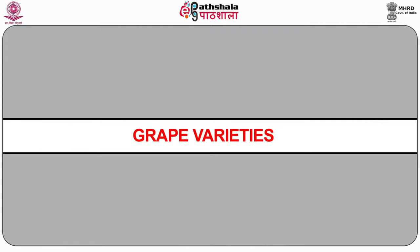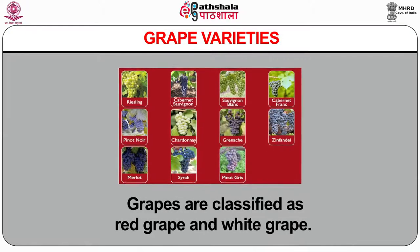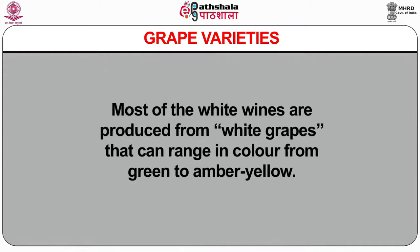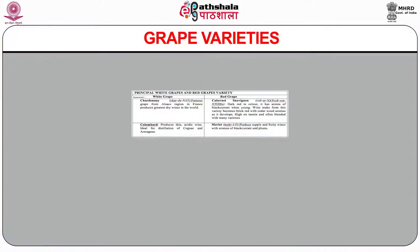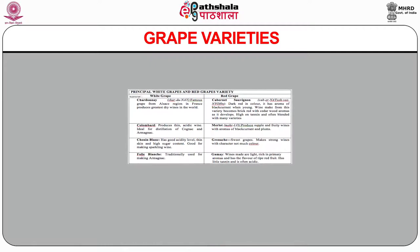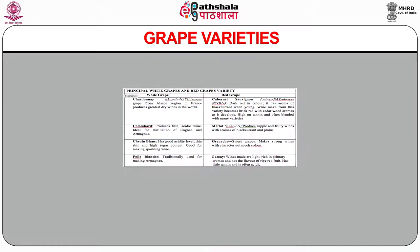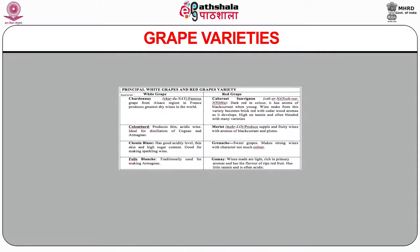Grapes are classified as red grape and white grape. Most white wines are produced from white grapes that can range in color from green to amber yellow. Red and rosé wines are made from black grapes. White wines can also be made from black grapes after removing the skin; however, red wines cannot be made from white grapes. Some of the principal grape varieties include Chardonnay, the famous grape from the Alsace region in France, which produces the greatest dry wines in the world. Cabernet Sauvignon is dark red in color and has the aroma of black currant.